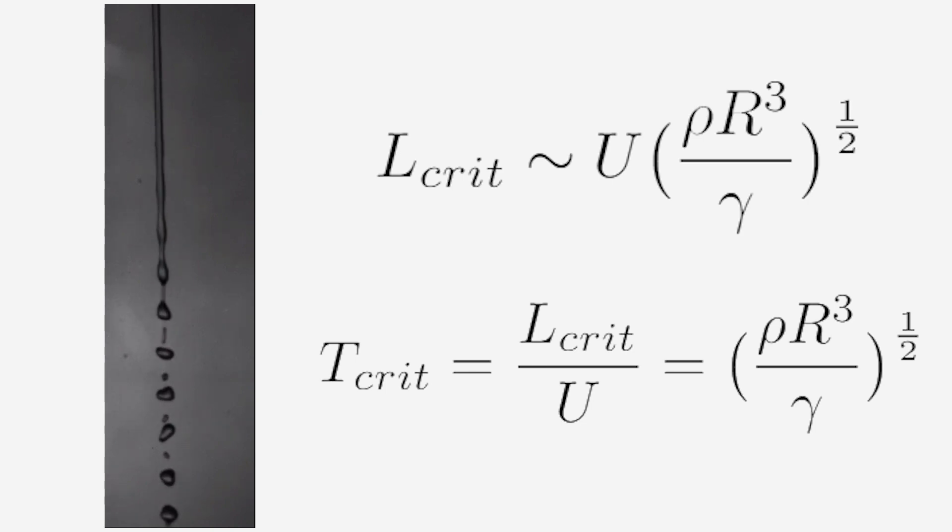The growth rate tells us how quickly the instability arises, which is dependent on the wavelength of the disturbance. This relationship can be described by the dispersion relation.